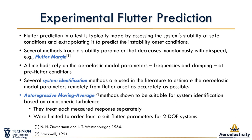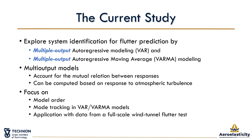The methods rely on accurate evaluation of the model parameters, which can be done with autoregressive models. In the current study, we focus on improvements to experimental flutter prediction by taking advantage of multiple data. We attempt to improve the aeroelastic system identification by analyzing multiple structural responses together, fitting them with the VARMA and VAR autoregressive models. We focus on model order selection, mode tracking issues, and application of the system identification methods with relatively large data sets.